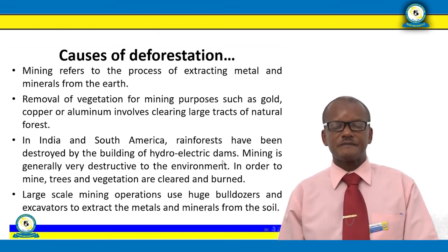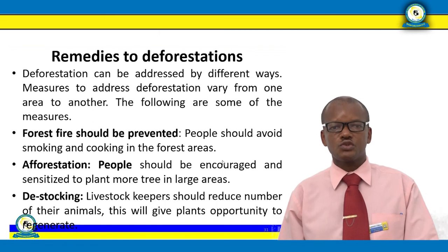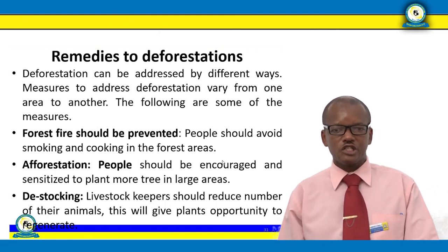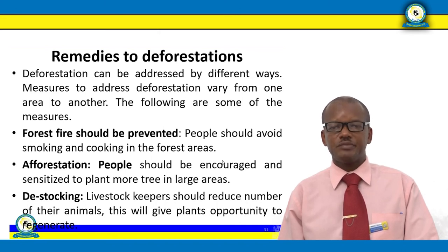Now let's move to solutions to deforestation. Deforestation can be addressed in different ways, and because the causes vary from one place to another, solutions also vary by locality. One measure is preventing forest fires — people should avoid smoking and cooking in forest areas, as some fires are deliberately caused and must be controlled. Another solution is afforestation — people should be encouraged to plant more trees in large areas through tree planting campaigns.